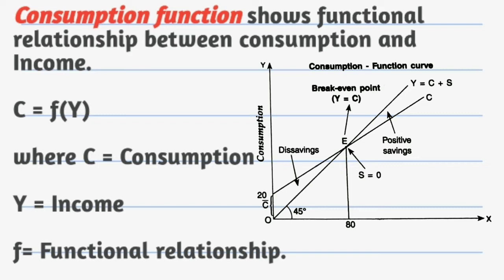Consumption function is nothing but the functional relationship between the consumption and the income. When the income is zero there is still consumption that is known as autonomous consumption. Let's take an example of a poor person who is not earning anything, his income is basically zero but still he is consuming food, shelter and cloth. So that is known as autonomous consumption. The second stage is when the income is equal to the consumption. That point is known as break-even point because whatever a person is earning he is spending the whole amount of money on his consumption. He is not at all saving, that means his savings are zero.